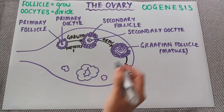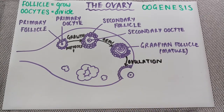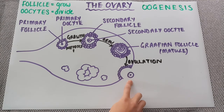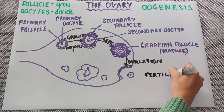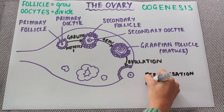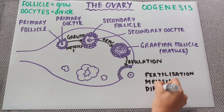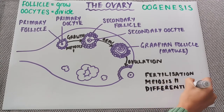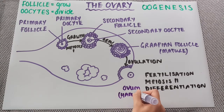The secondary oocyte then goes through the process of ovulation, where it is released from the ovary. This needs to go through a number of processes before it can actually form a final ovum. Firstly, it needs to be fertilised. It then will go through a full meiosis 2 division, and finally it will differentiate to become an ovum. Remember, with an ovum this is now haploid — we've gone through two divisions of meiosis and it has half the number of chromosomes.